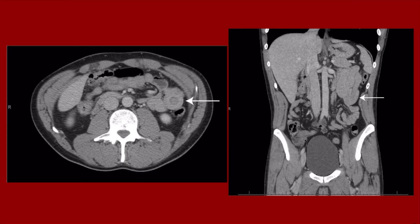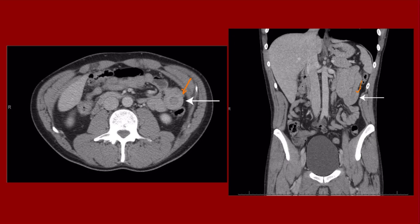On CT, you can see something very similar — the target sign — and you can actually visualize the intussusceptive bowel telescoping into the distal bowel. The management is reduction with contrast, which can be either barium contrast or air contrast. Air contrast may be slightly better, but on the USMLE you'll likely be asked about barium contrast. Either one is acceptable.